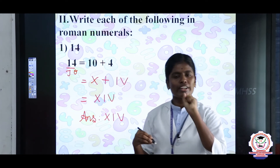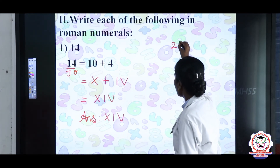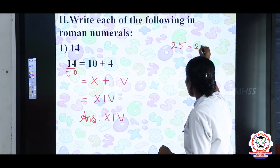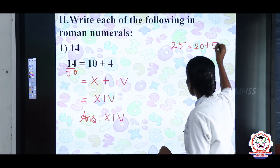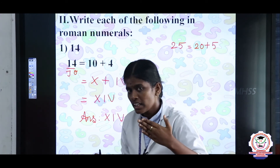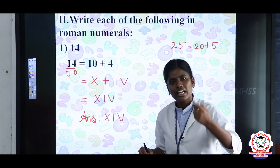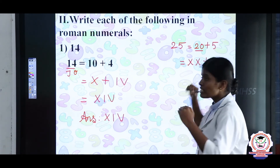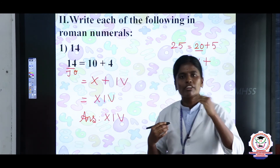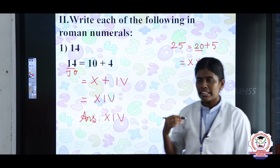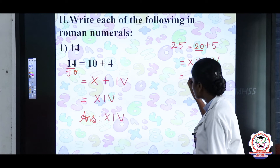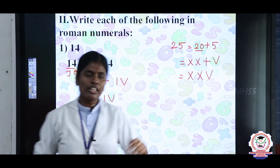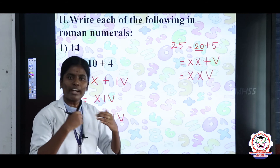Next example: 25. Using expanded form, 25 equals 20 plus 5. For 20, the Roman numeral is XX (since 10 is X, so 20 is X plus X). The Roman numeral for 5 is V. Remove the plus symbol and write the answer: XXV. The Roman numeral for 25 is XXV.